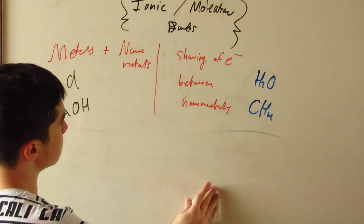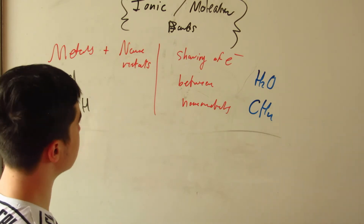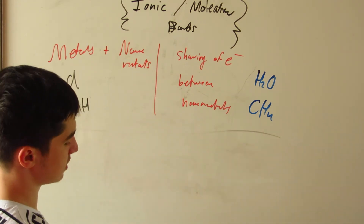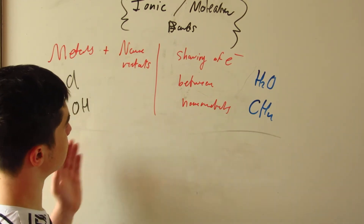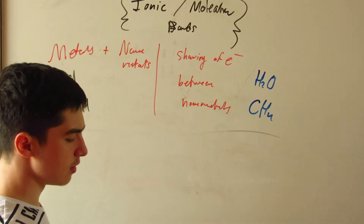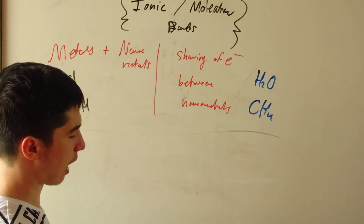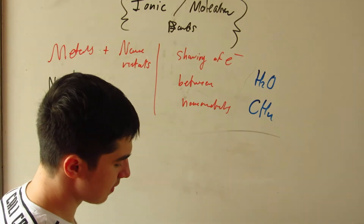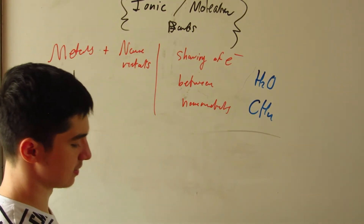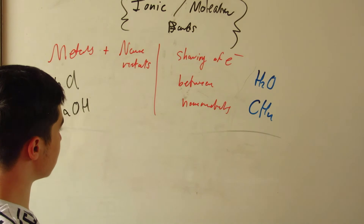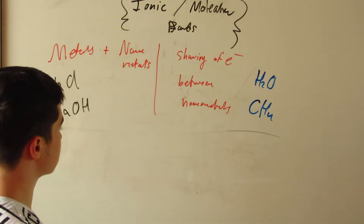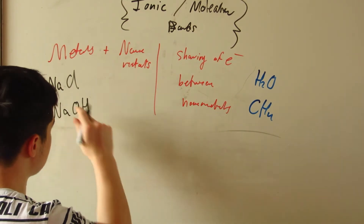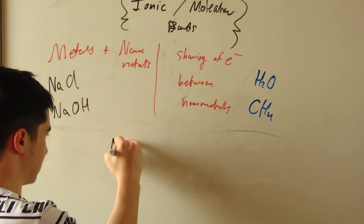We've distinguished ionic from molecular bonds by identifying the elements. But how do they actually look different? Let's explore that. For ionic, as we said, it's metals with nonmetals — for example, NaCl.